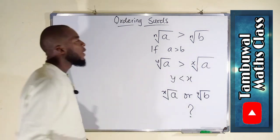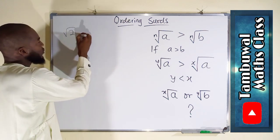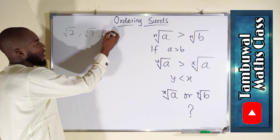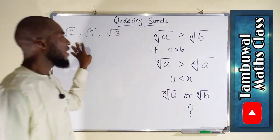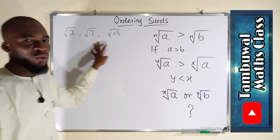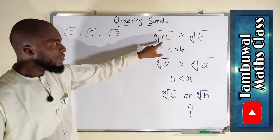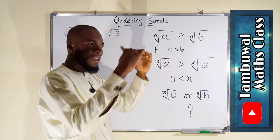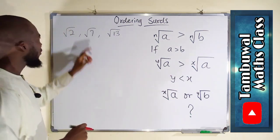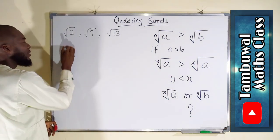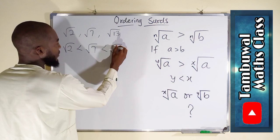Suppose we have square root of 2, square root of 7, and square root of 13. We want to know which one is the least and the greatest. These are all square roots with the same degree. Since the greater radicand means a greater surd, 13 is the greatest followed by 7 then 2. In ascending order: root 2 is less than root 7, which is less than root 13.